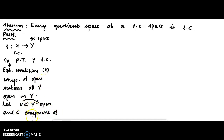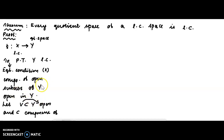To prove that Y is locally connected, we use the definition and equivalent condition of Y: the components of open subsets of Y should be open.